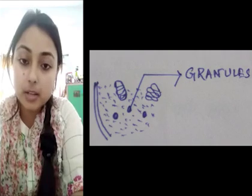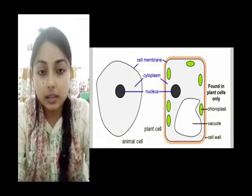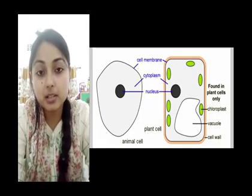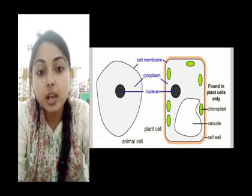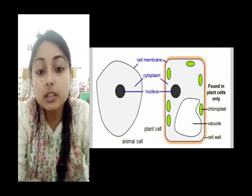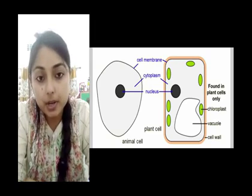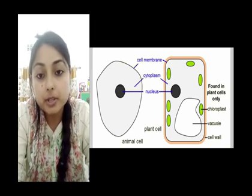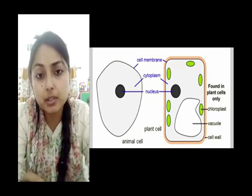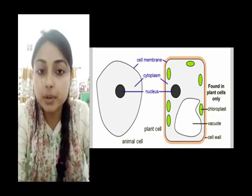Now that we know about the cell components, let us study the plant and animal cell in detail. Both plant and animal cells have the same basic structure — they contain the cell membrane, cytoplasm, nucleus, endoplasmic reticulum, Golgi body, mitochondria, and ribosome. However, there are some basic differences between the two.